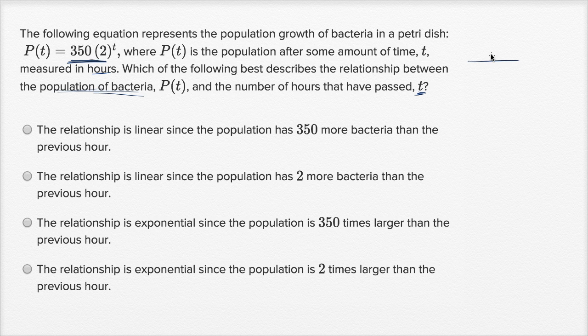When t equals zero, you can even see it if you draw a little table here. So if you say t and P(t). When t is zero, well then the population, two to the zero power is one, one times 350, the population's going to be 350.